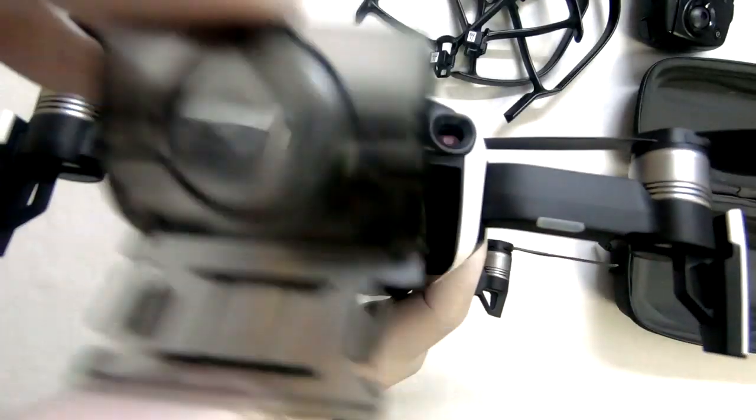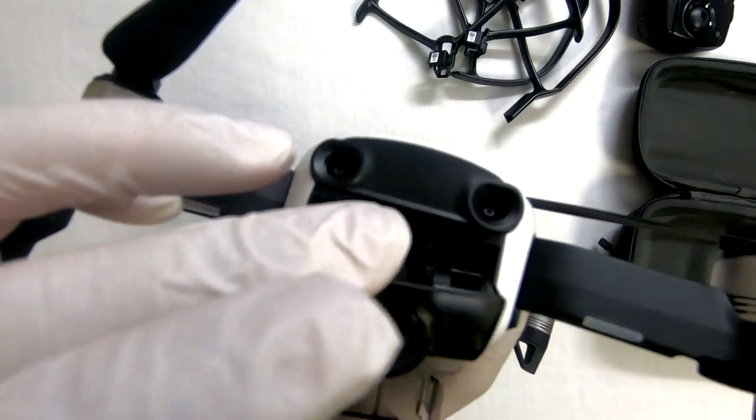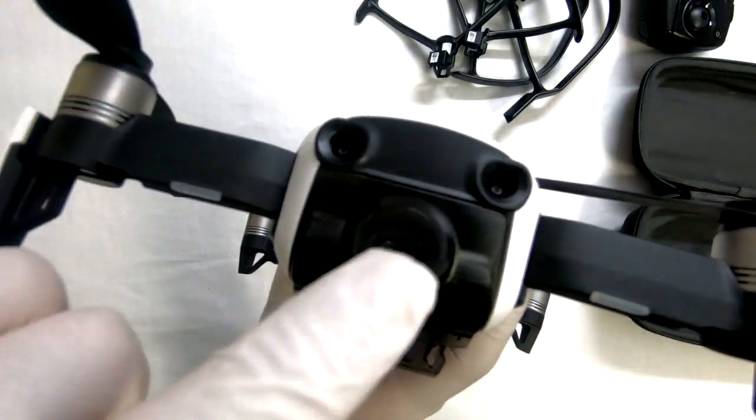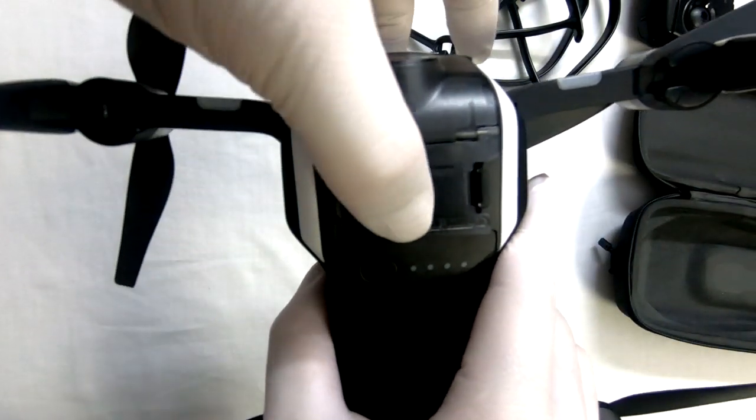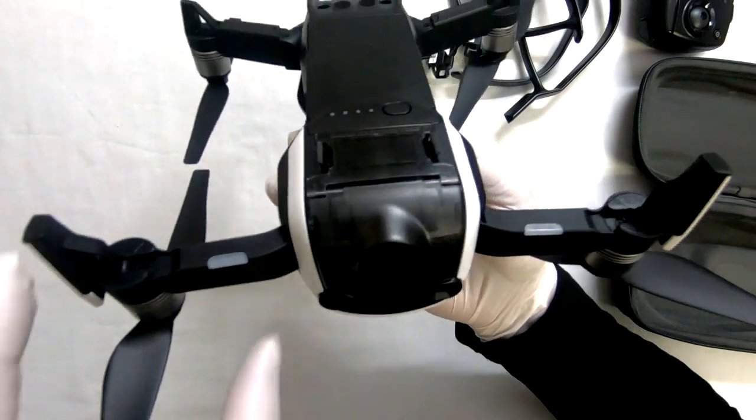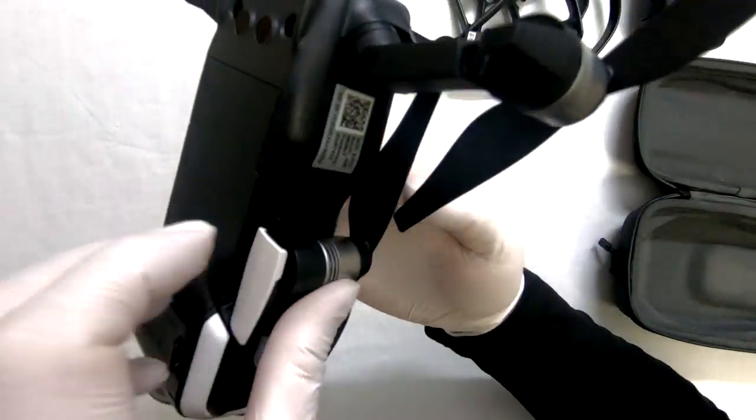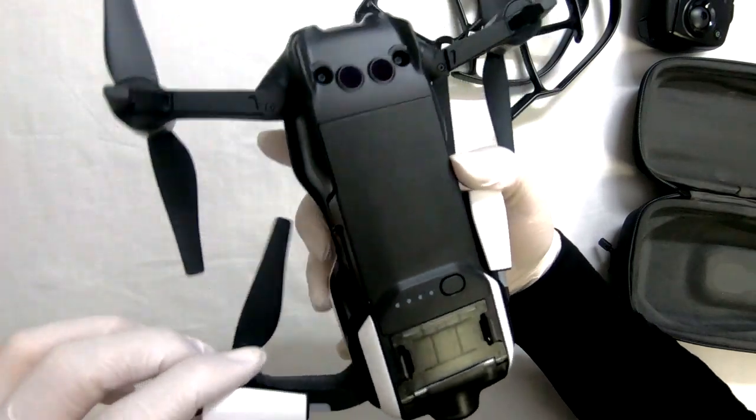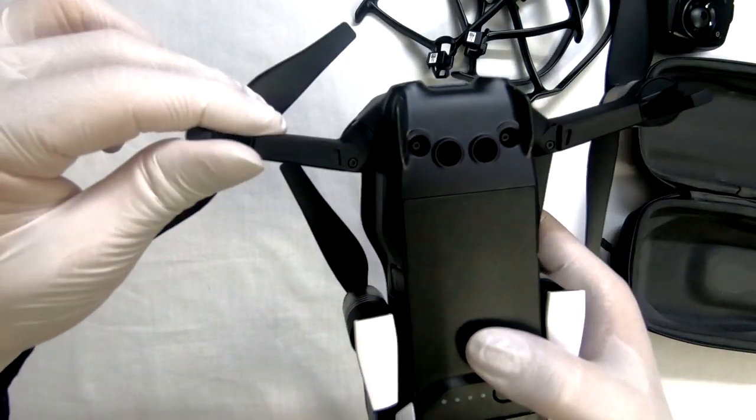And when packing up your drone, don't forget to put the gimbal guard back on. Fold in the little antennas, front arms first, and then the rear arms last.